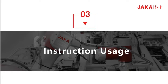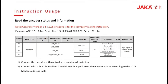Instruction usage: read the relative reading and status of the encoder. Note that the conveyor instruction requires controller version 1.5.12.25 or above to function. First, connect the encoder with the controller according to the procedure mentioned above. Second, use Modbus poll to connect the encoder. Then we can read the encoder reading and status according to the version 1.5 controller Modbus address table.